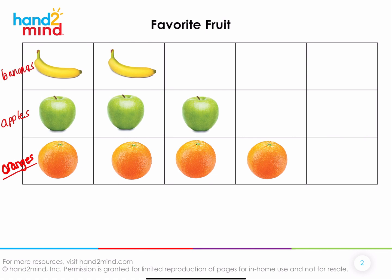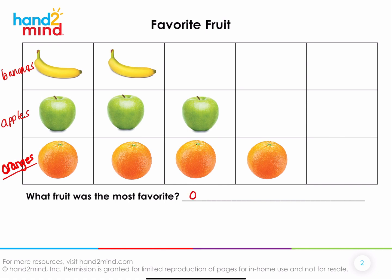Those are some really good noticings. Let's answer our first question: what fruit was the most favorite? Which fruit was the most favorite? Did you say orange? How do you know it's the orange? Can you tell the person sitting next to you, or tell the screen — how do you know orange was the most favorite?